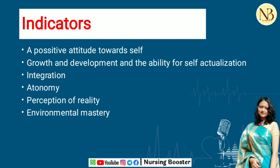The sixth indicator is environmental mastery. Environmental mastery means the individual has achieved a satisfactory role within a group, society, or any environment — they are able to play their role effectively within any setting.